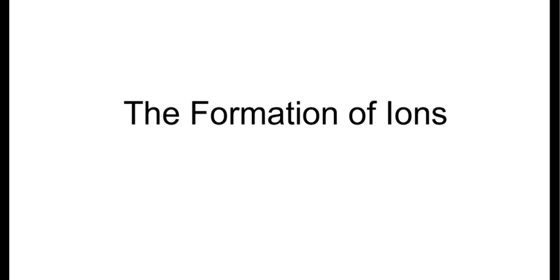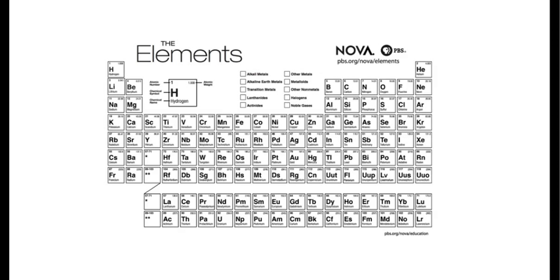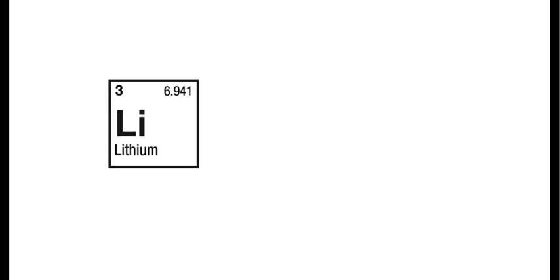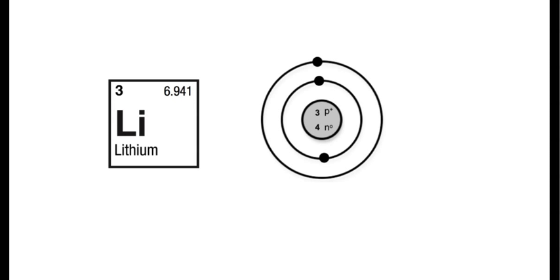This lesson will look at the formation of ions. If we take any atom on the periodic table, lithium is an example, draw its Bohr-Rutherford diagram to demonstrate.